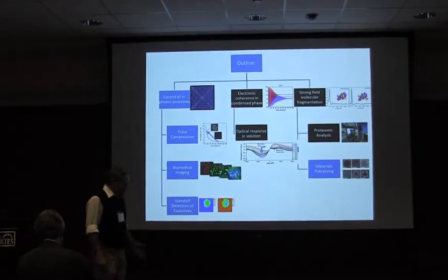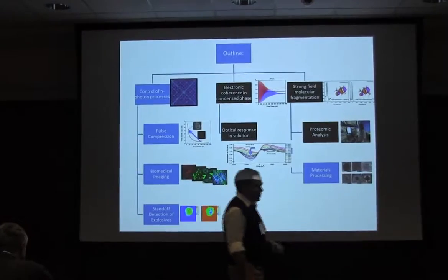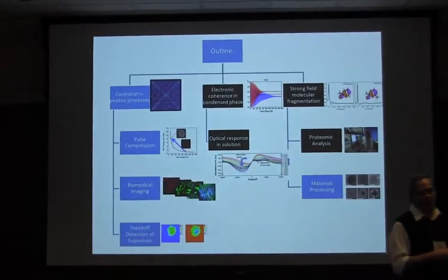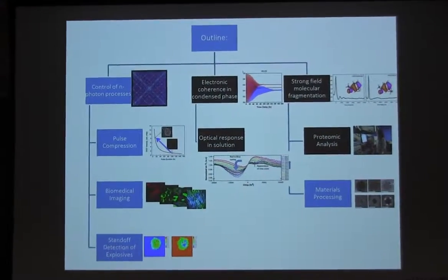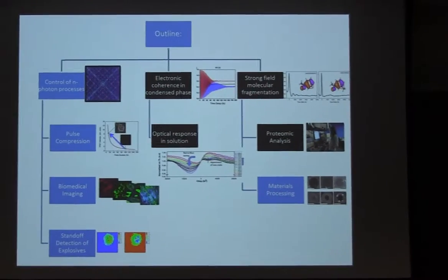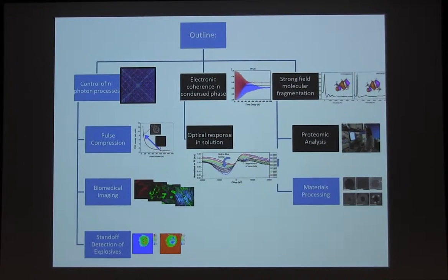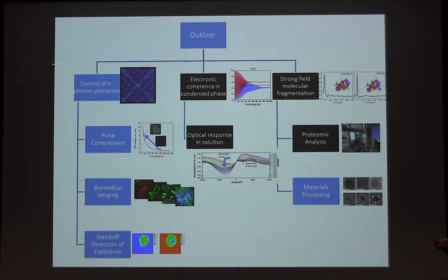In my research group, we work with ultra-short shaped pulses. And primarily, if you have a very short pulse, the first problem is how do you measure it, how do you compress it, how do you make sure that a short pulse gets into your sample? What is the phase of the pulse that is interacting with the sample? And then you worry about controlling nonlinear processes — what are the strategies, what is the best way to do that?